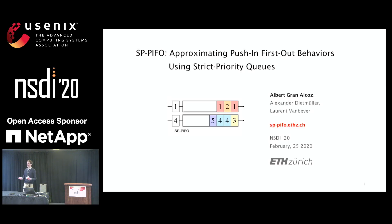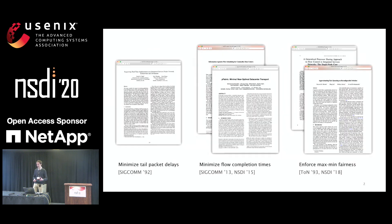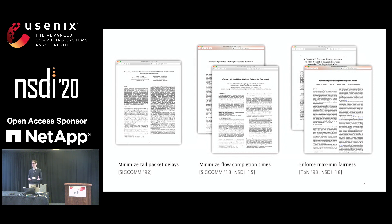Packet scheduling has been a classical problem in networking. It defines how to handle buffered packets on our networks, and in particular it defines the time and the order at which we should forward those packets. There have been a number of scheduling algorithms proposed in the last decades trying to achieve different performance objectives — some try to minimize tail packet delay, some try to minimize flow completion time, and others try to enforce fairness between tenants in the network.